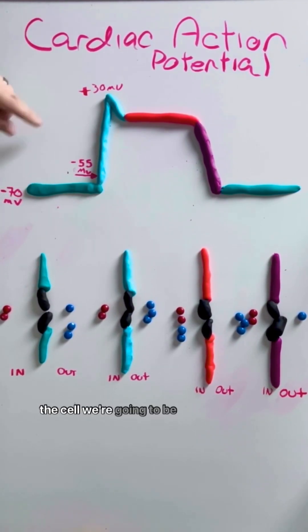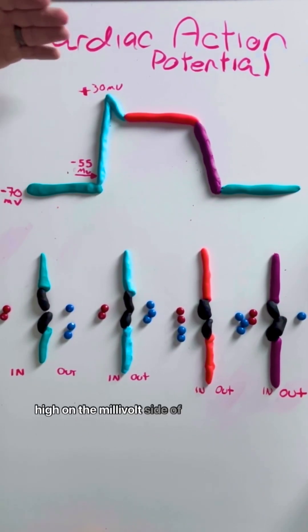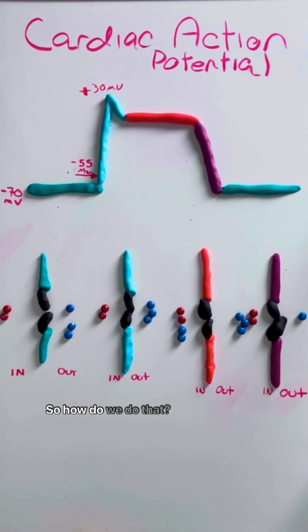And at its very peak inside the cell, we're going to be roughly around plus 30 millivolts. We're going to get pretty high on the millivolt side of things once we hit our peak. So how do we do that?